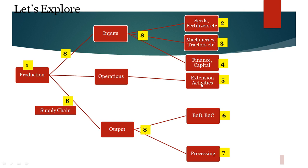So, once the produce is harvested, we get yield, which needs to be supplied either through B2B or B2C in raw form, or is sent to the processing units.